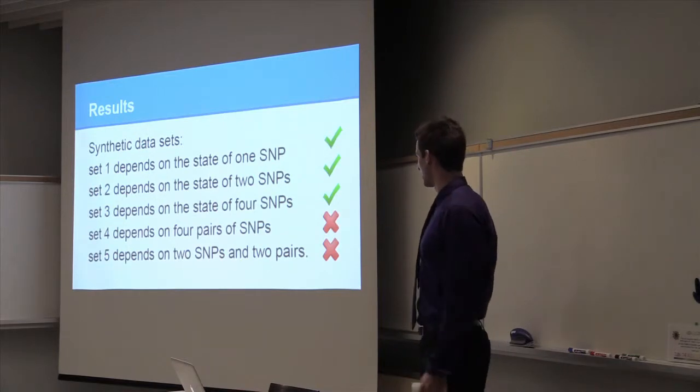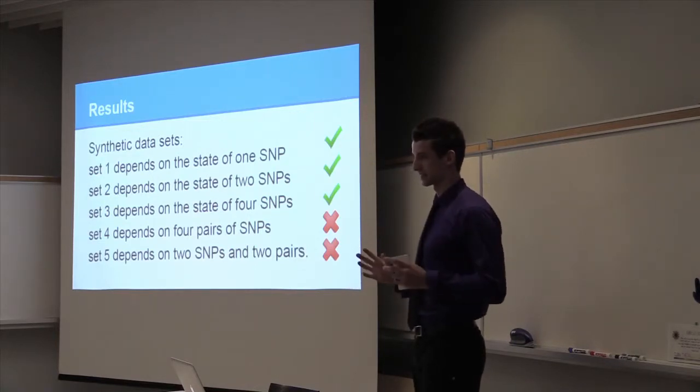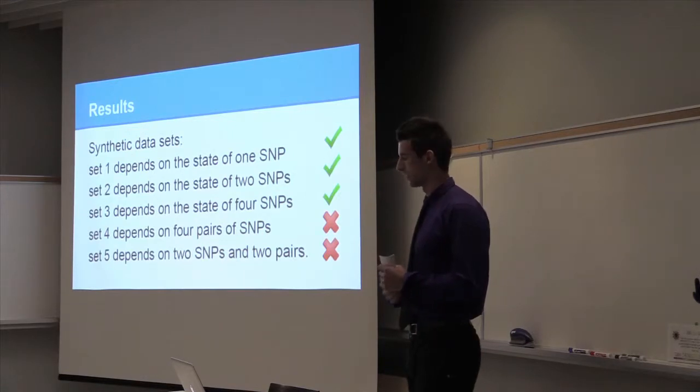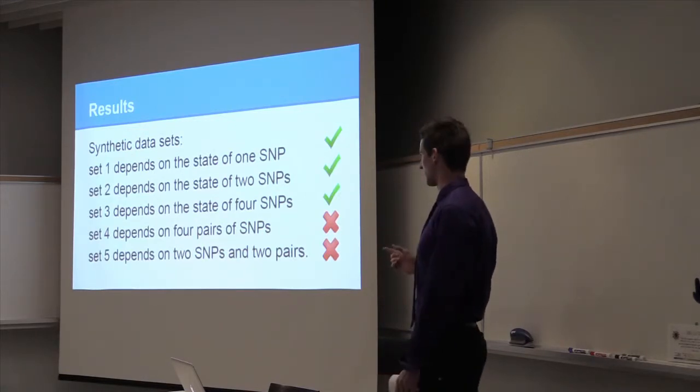And then set three depends on the state of four SNPs. So I generated the associator map once again and then mined for the best clique of size four, and it ended up being correct according to his answer key. So the four SNPs that control the trait, they were identified by finding the best clique of four. And that worked out and that was cool.